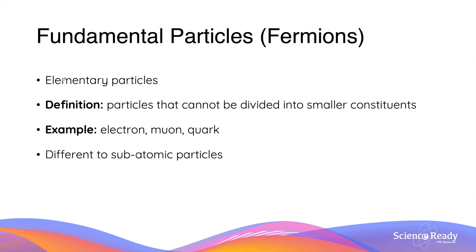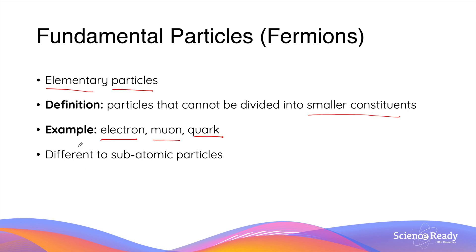Fermions are fundamental particles, otherwise known as elementary particles, that make up matter. Elementary particles are particles that cannot be divided into smaller constituents. Examples of fermions include electrons, muons, and quarks — and these are different from subatomic particles.